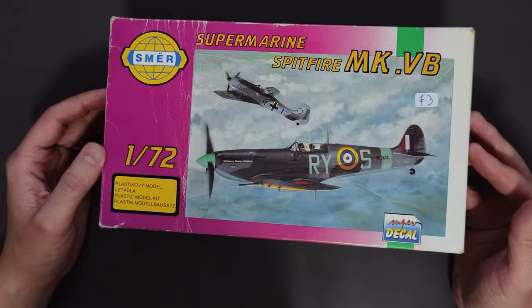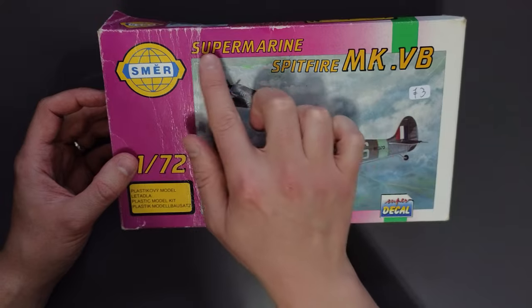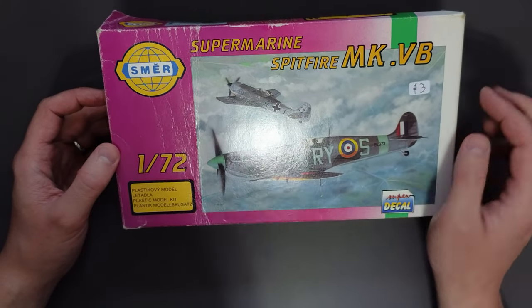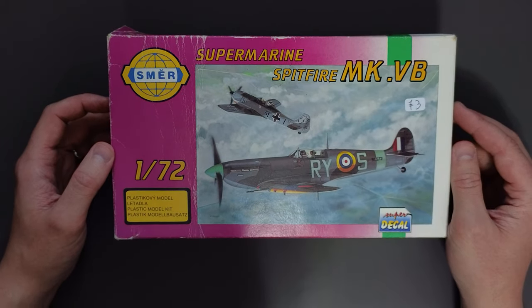Hello everyone, Matt from Bottle Minutes here and welcome back to the workbench for another unboxing. This week we're taking a look at another vintage kit. This time it's the Smurf Supermarine Spitfire Mark VB in 1:72 scale. So join me as I take a look inside the box and see what this kit was like.